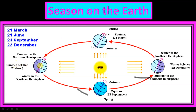On 21st June, sun rays fall on the Tropic of Cancer. India is located near this line — the Tropic of Cancer almost divides India into two equal halves — so we face the direct rays of the sun. That is why in June, it is summer in the northern hemisphere, while the southern hemisphere, being far from the sun, has winter.